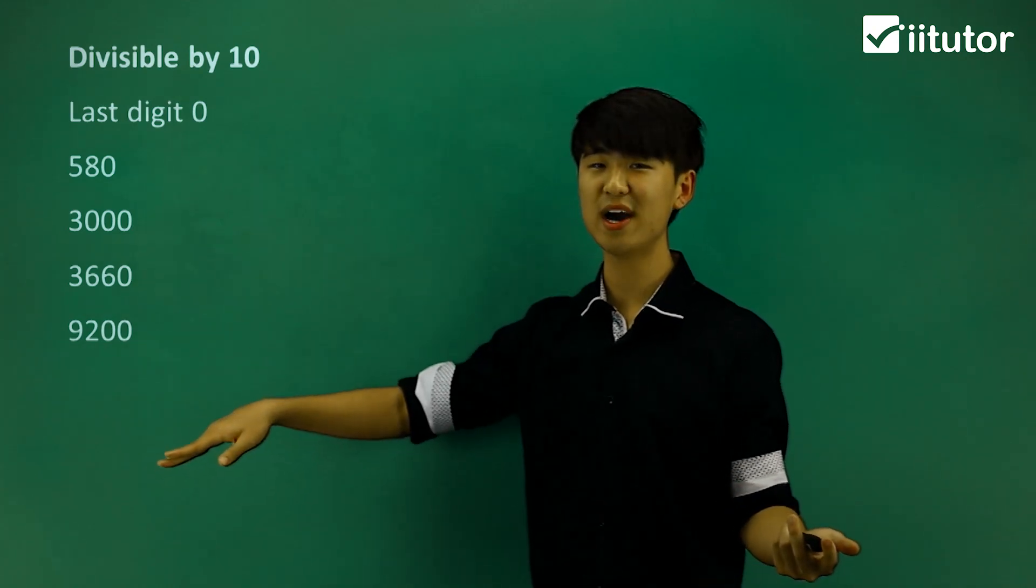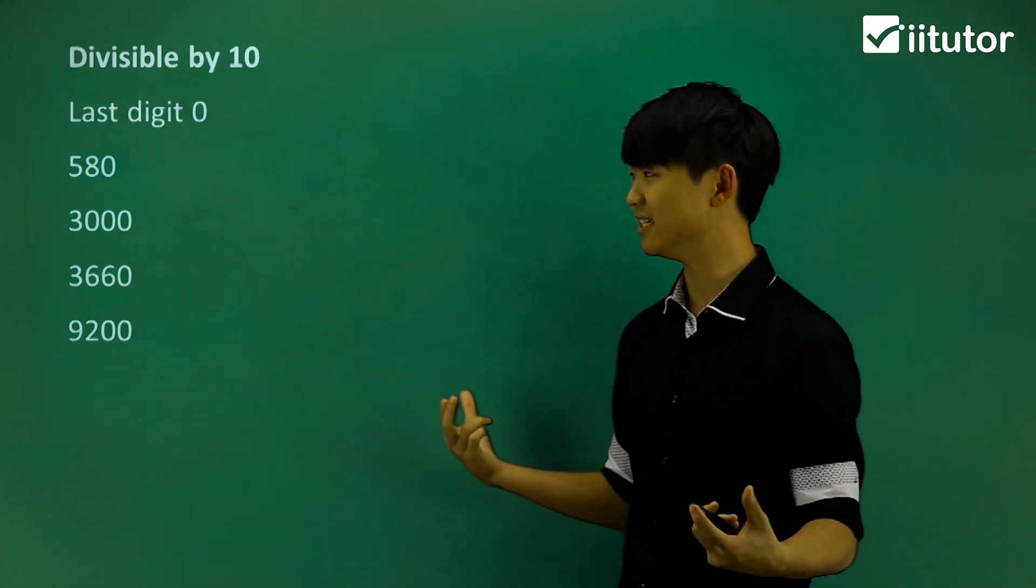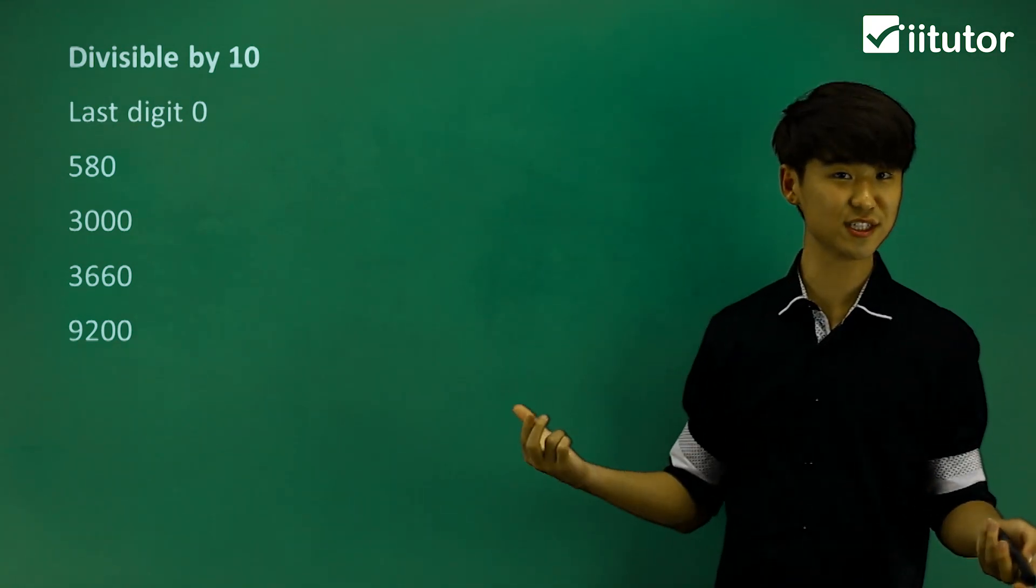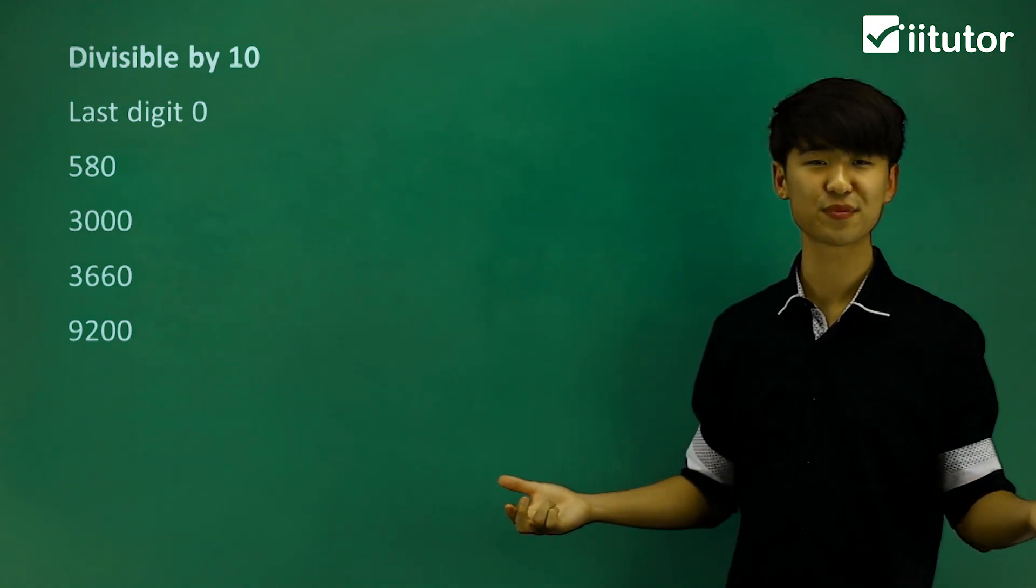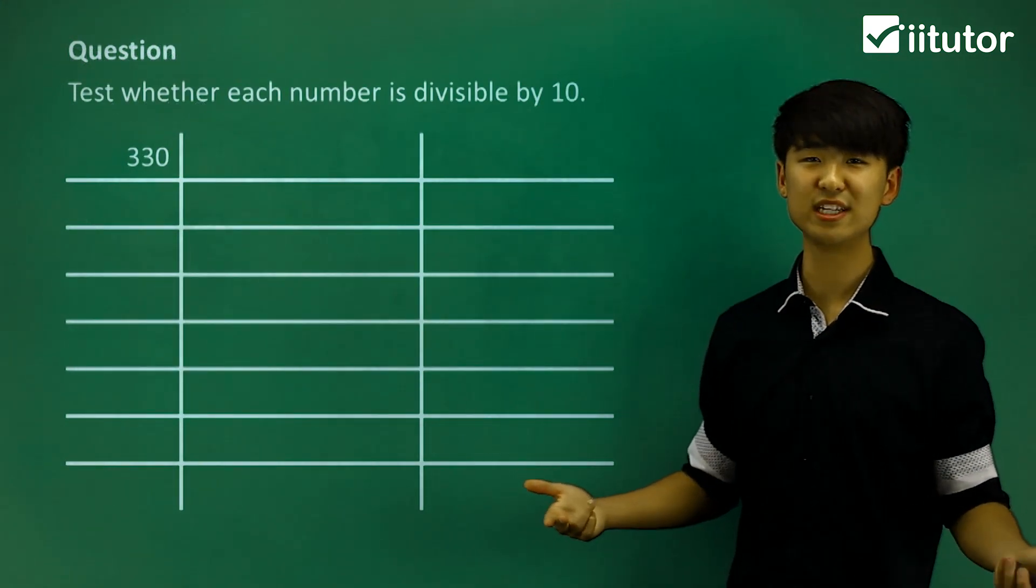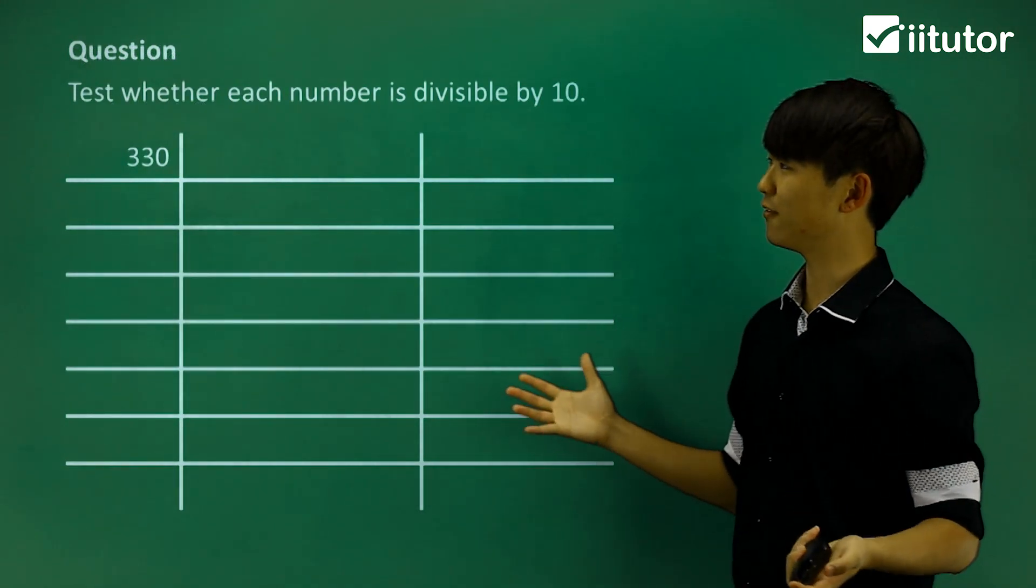So we can see why divisibility of 10 is the easiest divisibility test. We're just seeing if the last digit is 0 or not. So if we test whether each number is divisible by 10, this should be fairly straightforward.